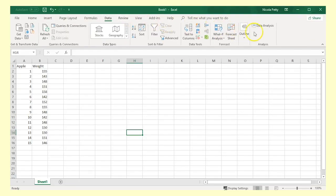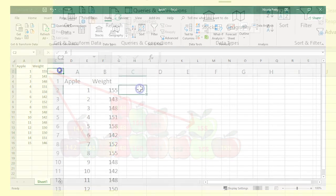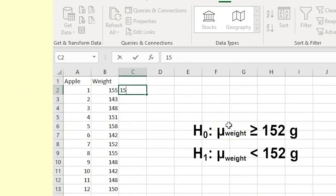Open your spreadsheet. Make sure you have the data analysis add-in. Your data needs to be in columns with one row for each observation. In this case, each row corresponds to an apple with its weight. Make another column with the value from the null hypothesis given twice. Our hypothesized mean is 152.